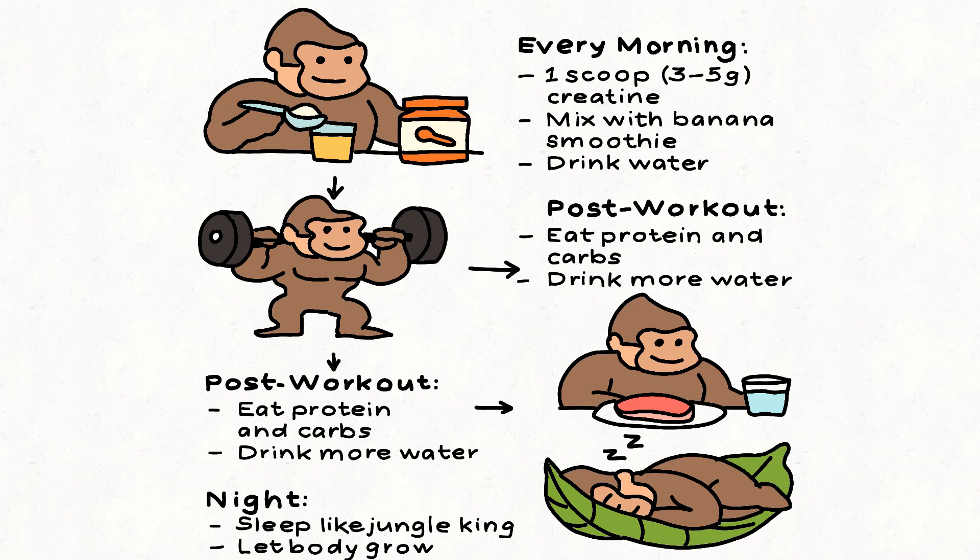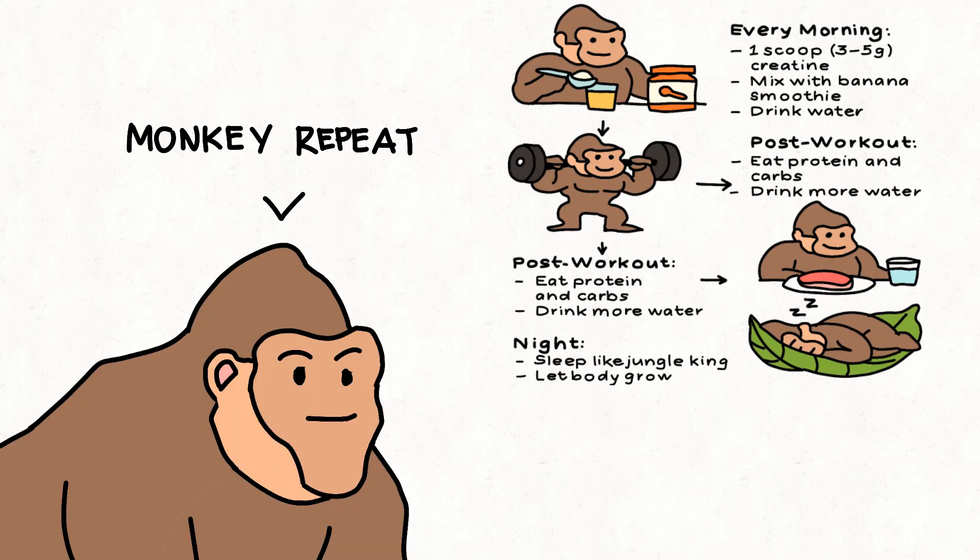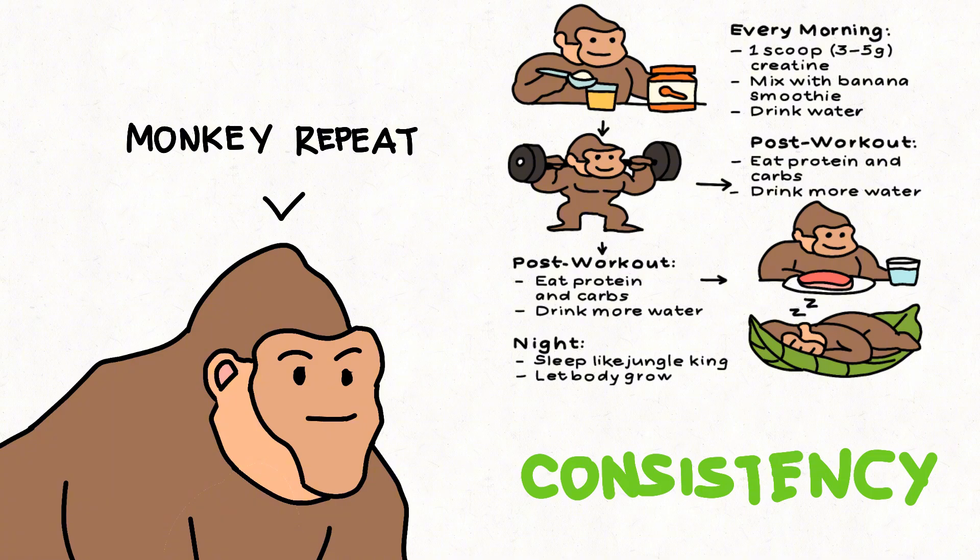Every morning: one scoop, 3 to 5 grams creatine. Mix with banana smoothie. Drink water. Workout: train heavy, 6 to 12 reps, progressive overload. Focus on compound lifts. Post-workout: eat protein and carbs. Drink more water. Night: sleep like a jungle king. Let body grow. Monkey repeats daily, training or not. Consistency is the real secret.